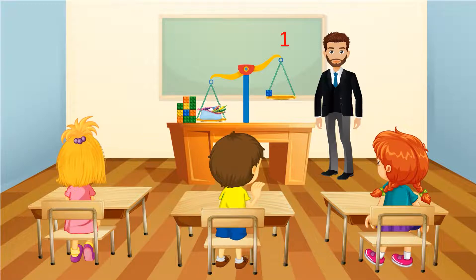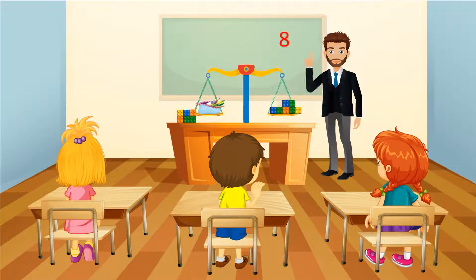One, two, three, four, five, six, seven. It's not balanced yet. Eight. Now the two sides of the scale are at the same level. This means that the scale is balanced. So the mass of the pencil case is eight cubes.